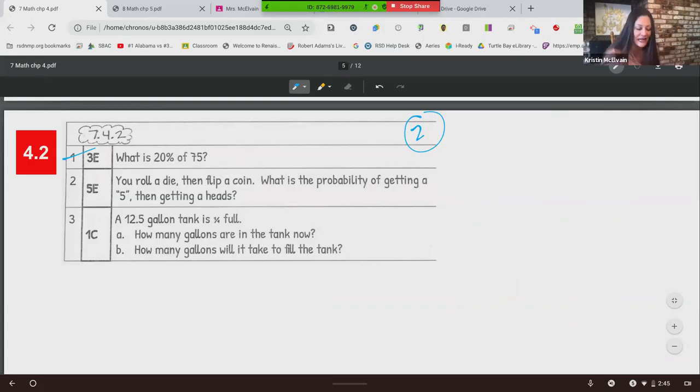So on a die, there are six sides. There's one five out of the six sides. And then we are going to multiply that times the probability of getting a heads. Well, on a coin, there's two sides. One has a head out of the two sides. So that gives us a one out of 12 chance that we'll get a five and then a heads.